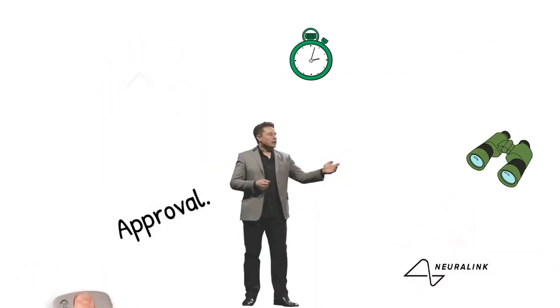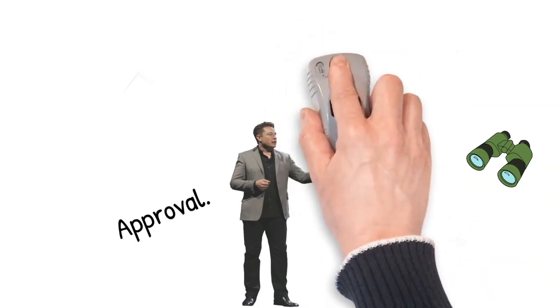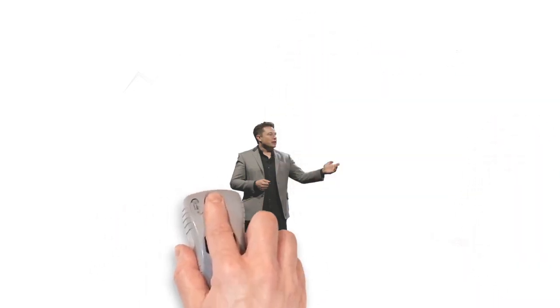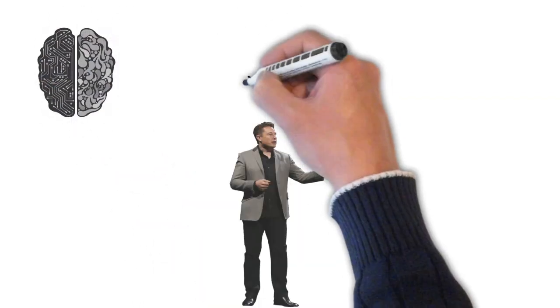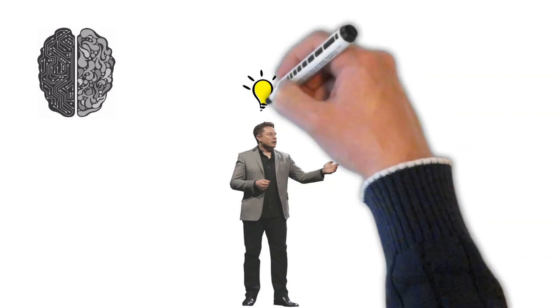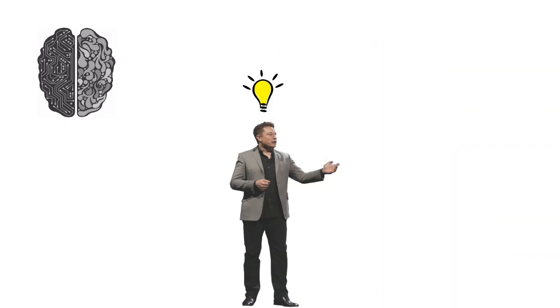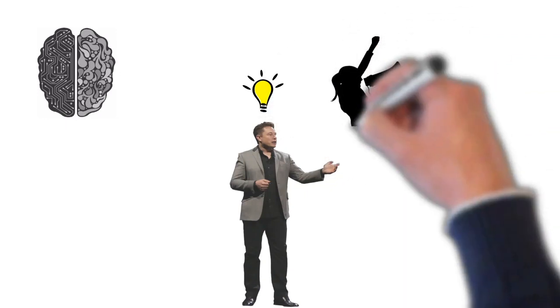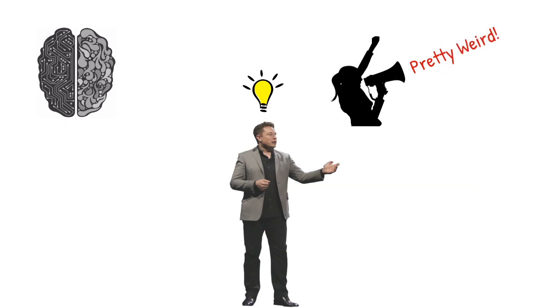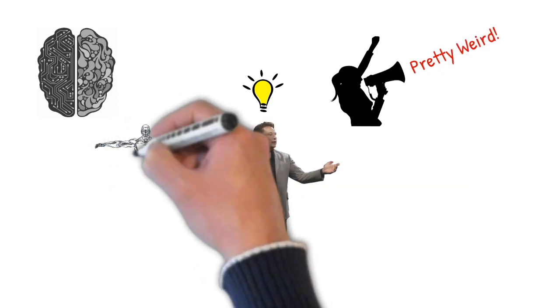This will be a slow process where we will gradually increase the issues that we solve until ultimately we can do a full brain-machine interface, meaning that we can ultimately achieve a sort of symbiosis with artificial intelligence. This is going to sound pretty weird.